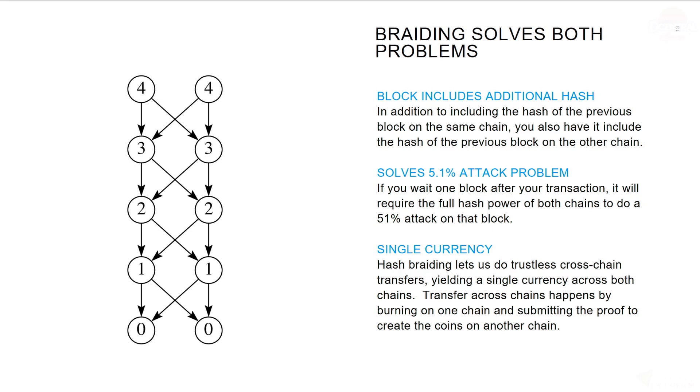The hash braiding also lets us do trustless cross-chain transfers, yielding a single currency across both chains. The way you transfer across chains is you burn on one chain, submit the proof of that burn, and create the coins on the other chain.